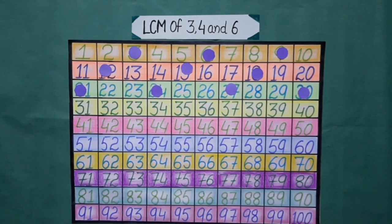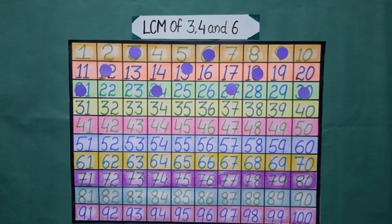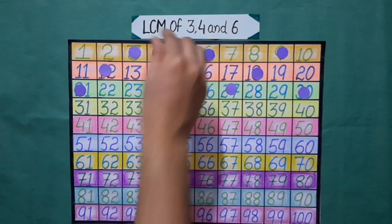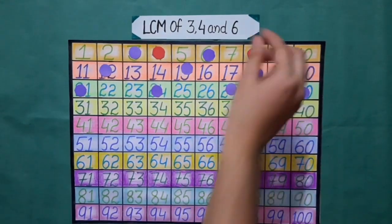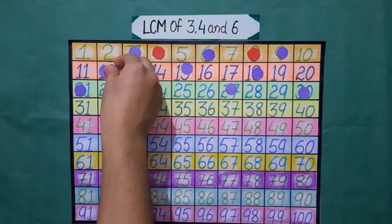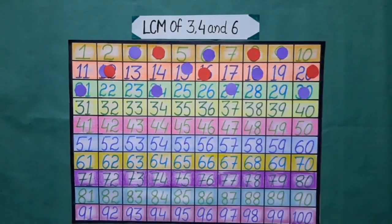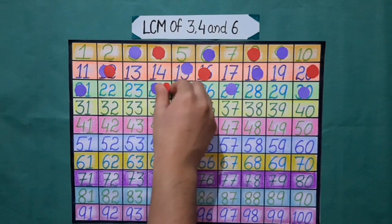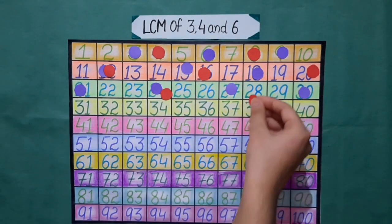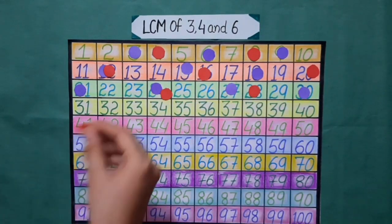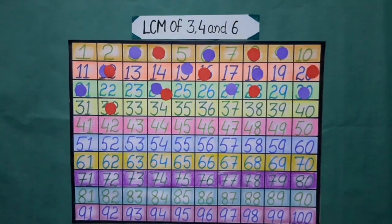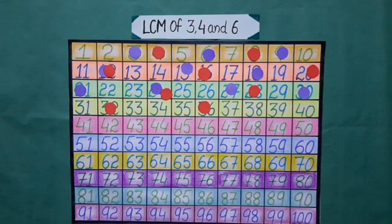Now while reciting the table of 4, we will put the red bindis on the multiples of 4. 4 ones are 4, 4 twos are 8, 4 threes are 12, 4 fours are 16, 4 fives are 20, 4 sixes are 24, 4 sevens are 28, 4 eights are 32, 4 nines are 36, 4 tens are 40.